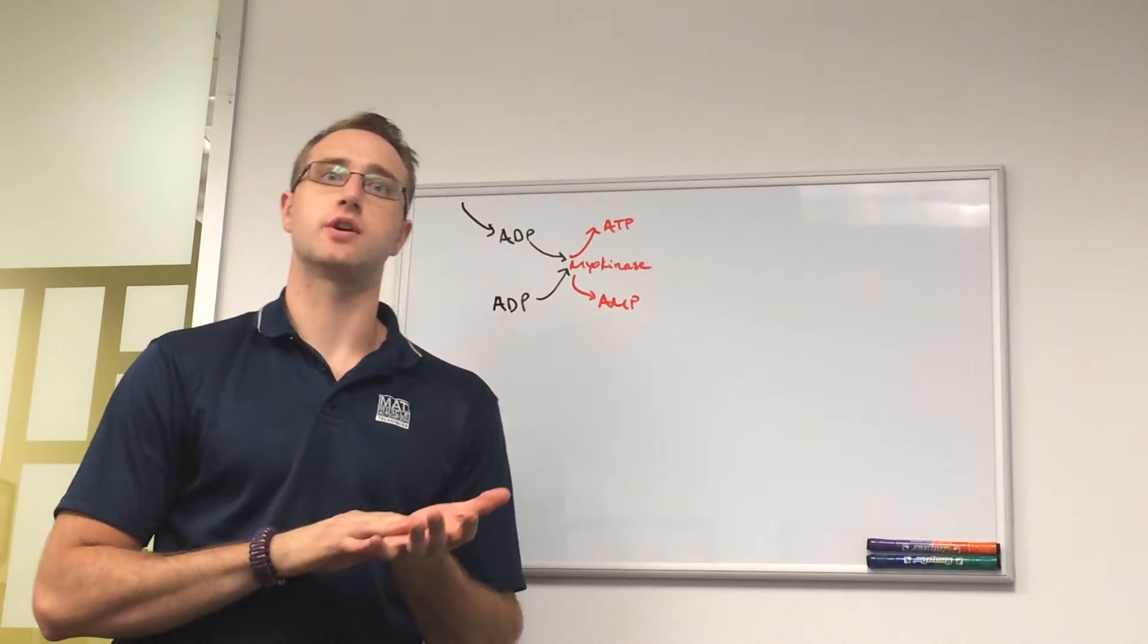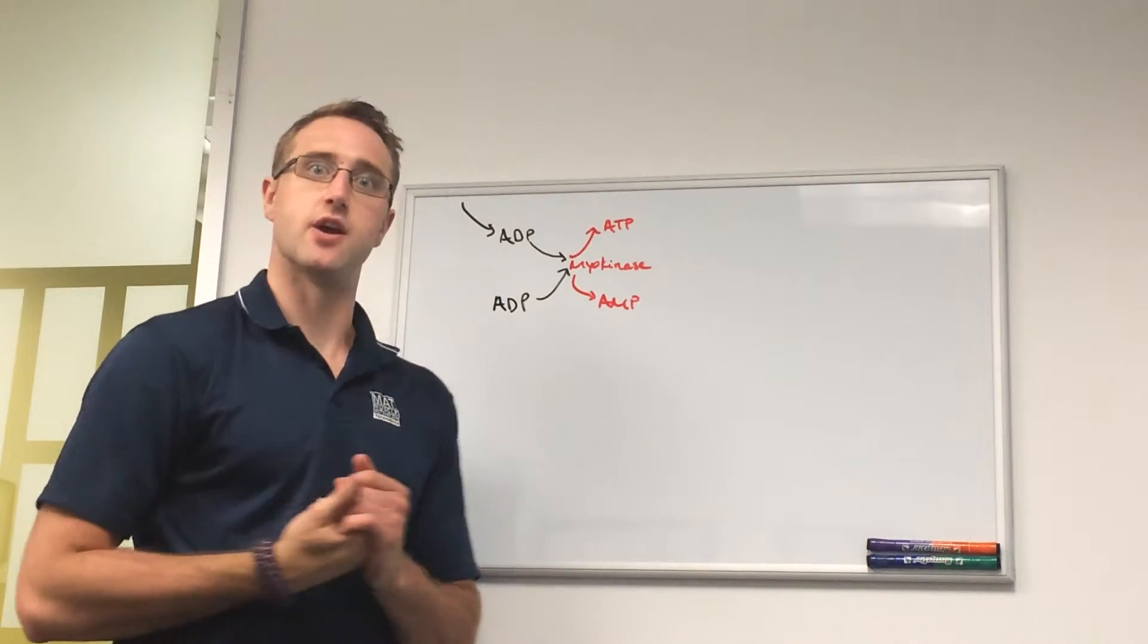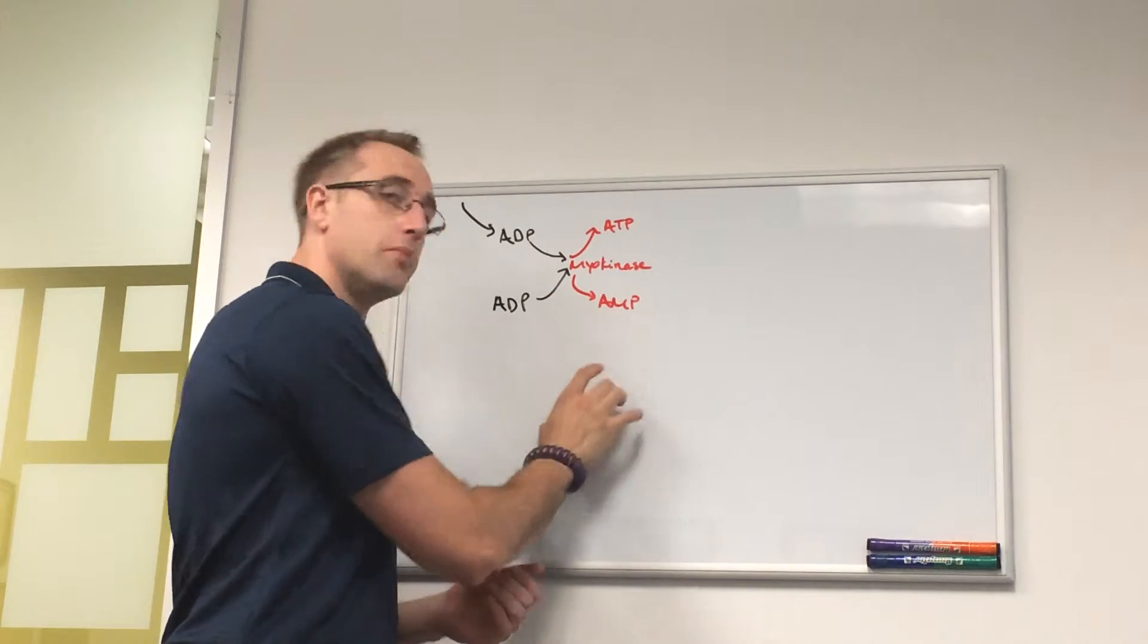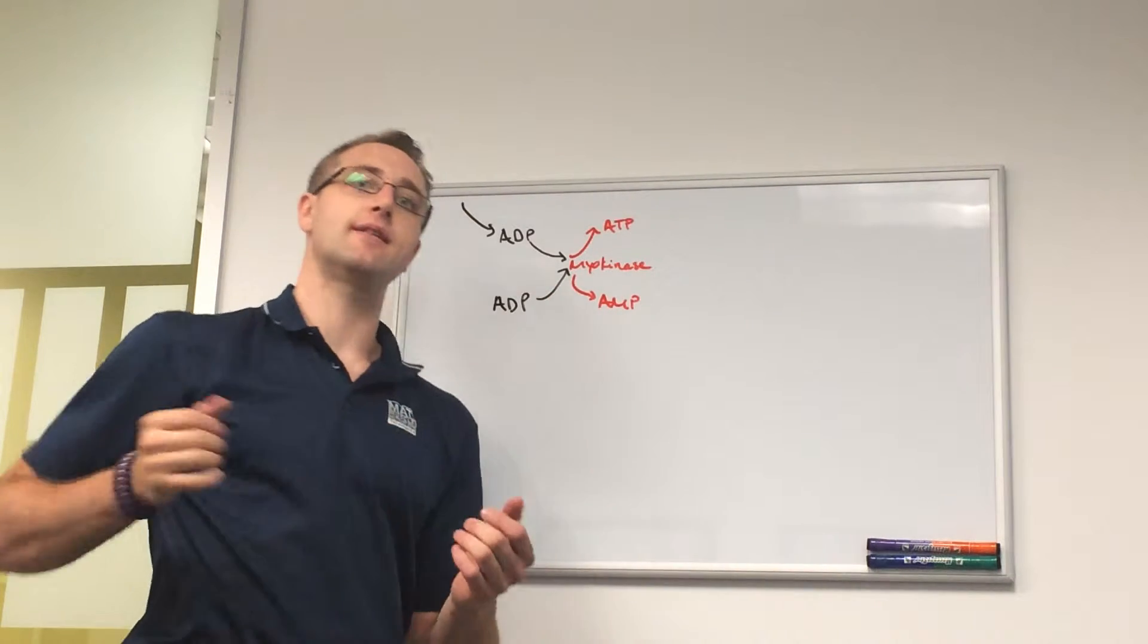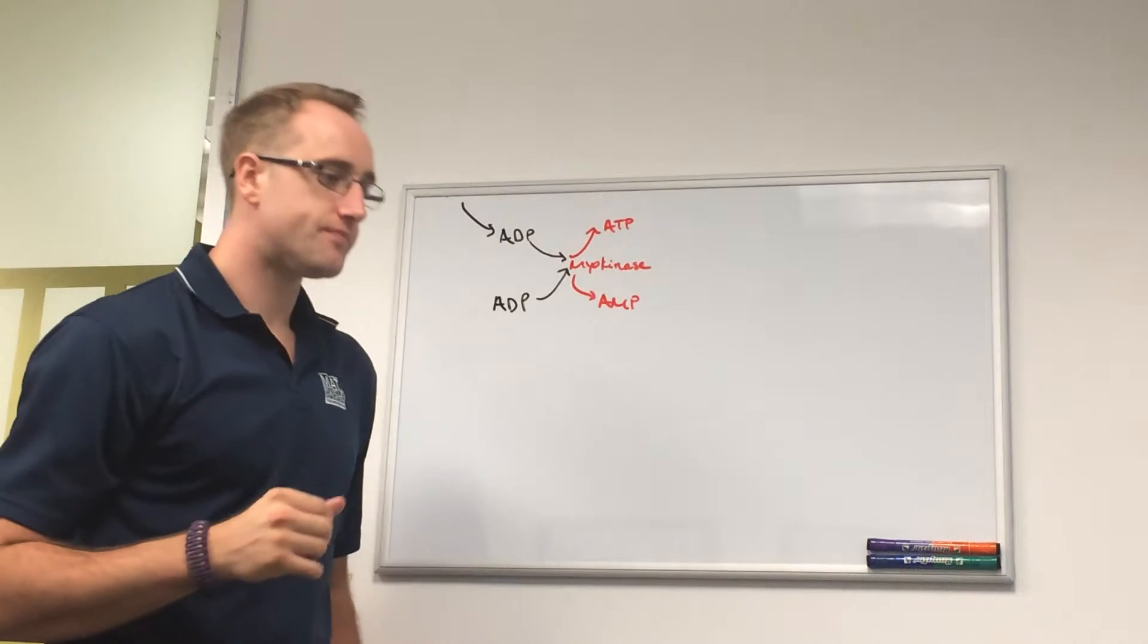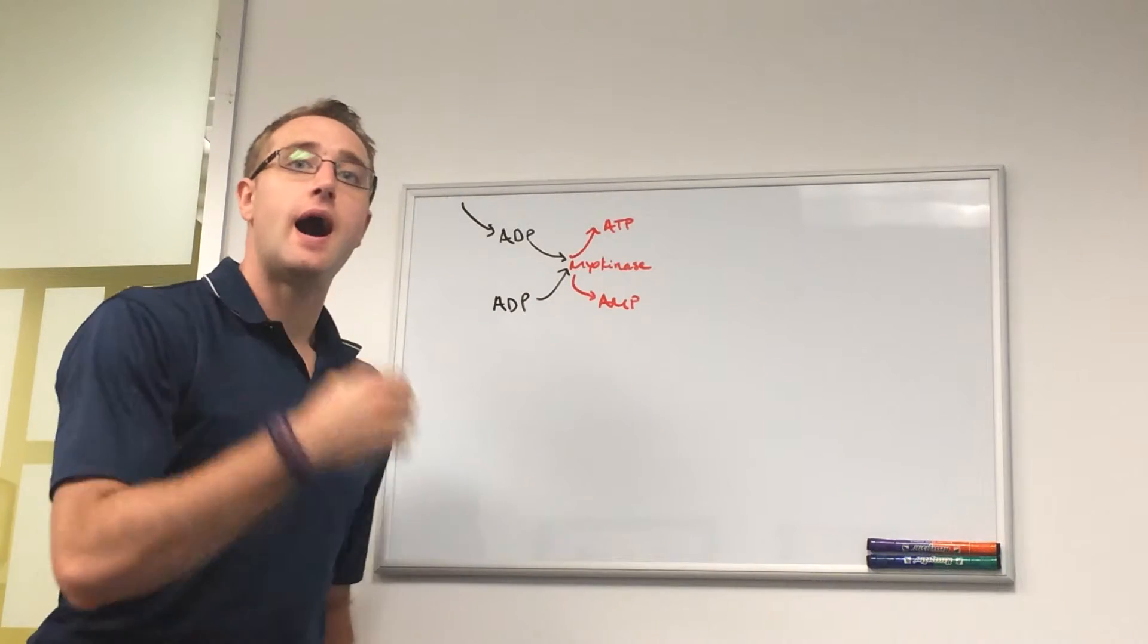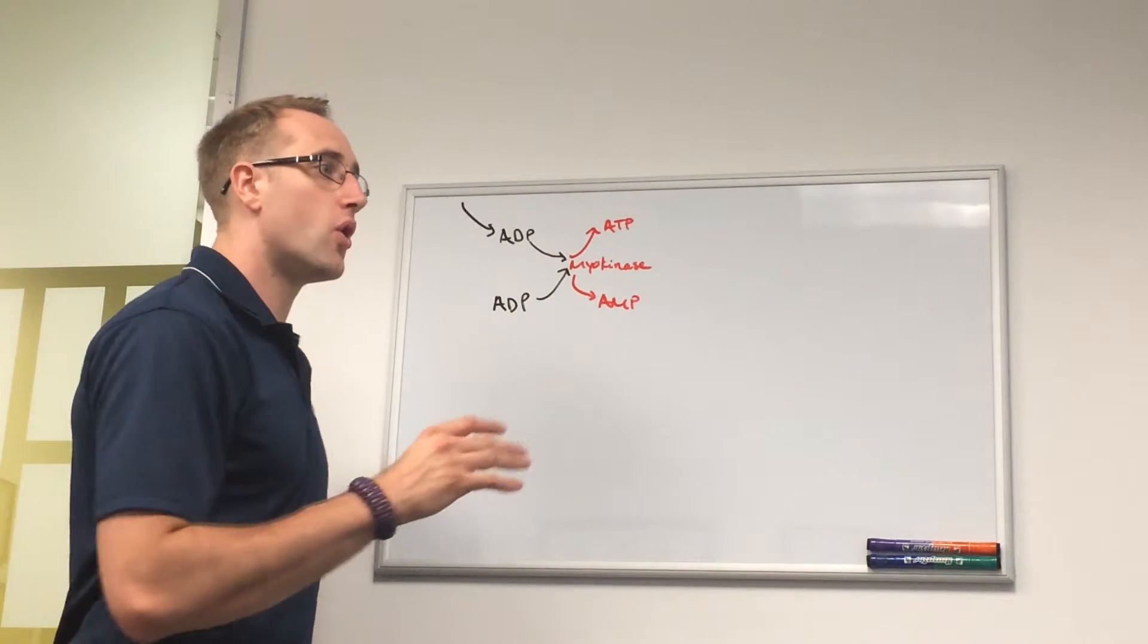And eventually diffuses out of the cell. Alright, now myokinase is a high KM enzyme, or it has a low affinity. So in order for it to reach half of its maximum velocity, it needs a high amount of its substrates present.